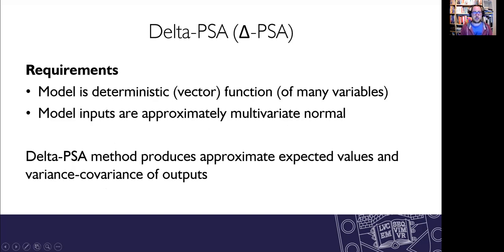So the delta PSA needs you to have a deterministic model, which is a function of the many variables that go in and for those model inputs to be approximately multivariate normal. And then what it produces are expected values and the variance covariance matrix of the outputs from the model.